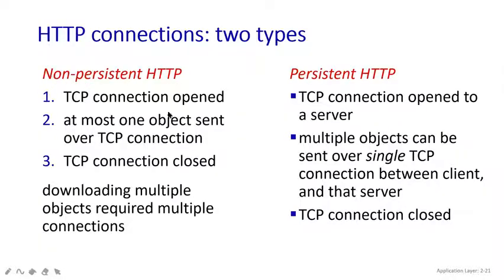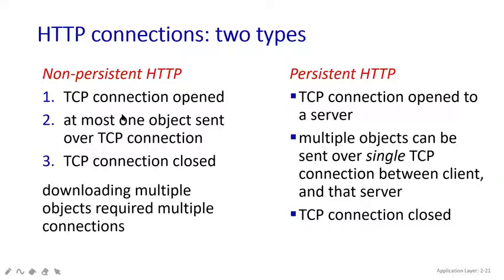In non-persistent HTTP, a TCP connection is opened — the TCP builds the connection between the client and server. But in persistent HTTP, the TCP connection is opened only for the server; it will not open for the client side. So if the client wants to send any message, he cannot build the connection because it will be only for the server — the server opens the TCP connection and builds the connection with the client. But in non-persistent, both sides, client and server, are open to get the TCP connections.